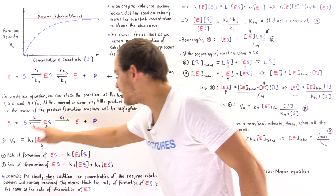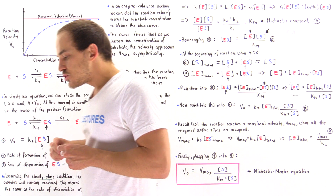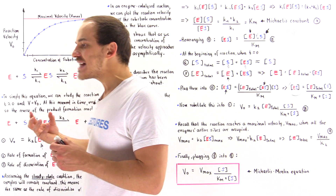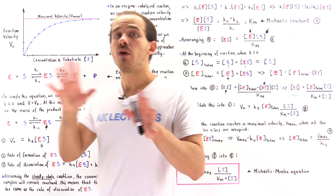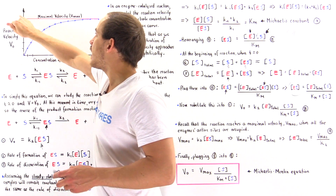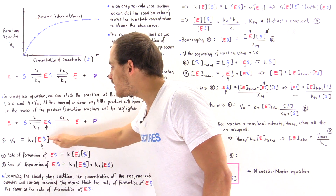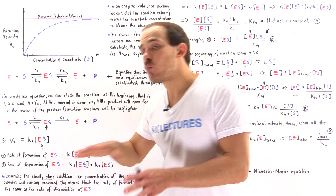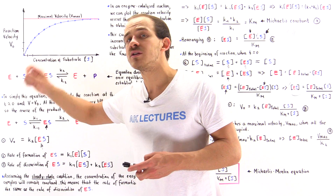We plug that in and get the following result. Now the final thing we want to ask ourselves is: what exactly is the V-max? The V-max is the maximum velocity of that enzyme — the maximum rate at which the enzyme can operate. To obtain the maximum rate, all the active sites on all the enzymes have to be occupied with the substrate. And what that means is: when the enzyme-substrate complex concentration equals the total concentration of the enzyme, that is the condition for V-max.